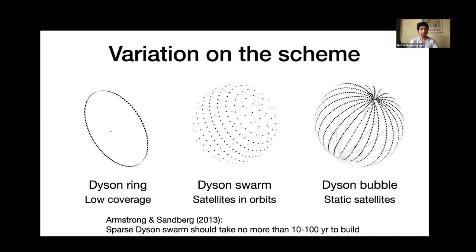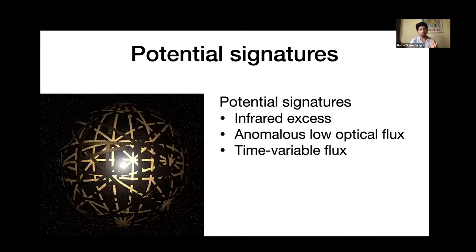But regardless of the structure we are talking about, their potential signatures would be the same. First of all, we have to recall that whatever happens in a Dyson sphere is going to be a thermodynamic process. And as in any thermodynamic process, this harvest of energy is going to imply some waste heat to be released to the space. Also, the structure would partially block some of the star lights. So the second signature would be a drop in the optical flux. Finally, we have another signature, a time variable flux. But this is very dependent on the kind of the structure, the nature of the structure.